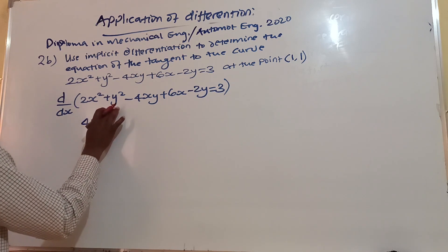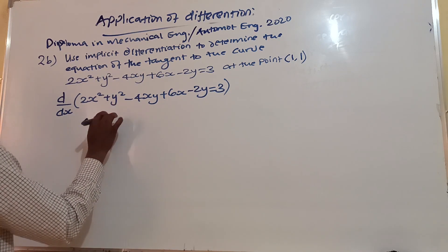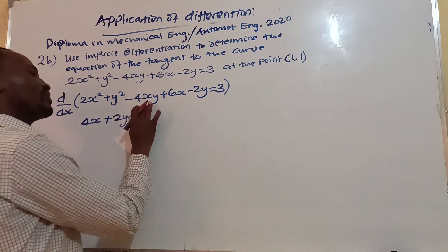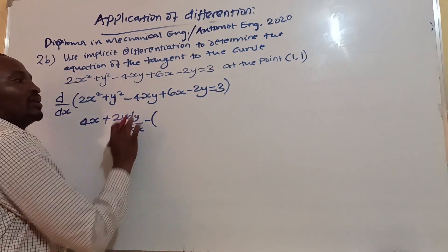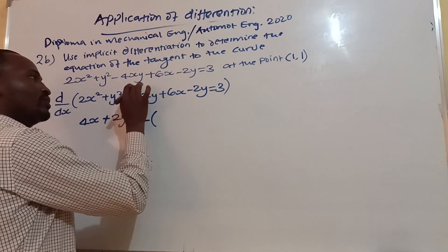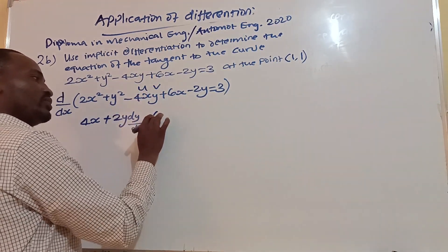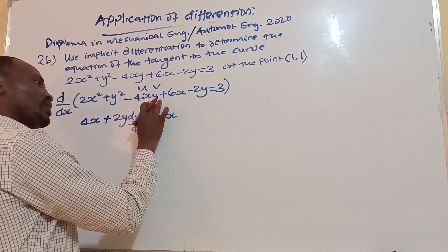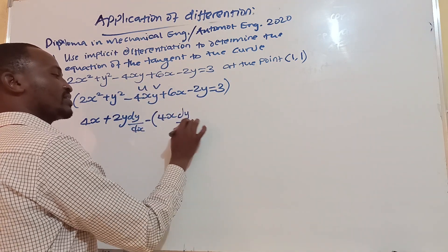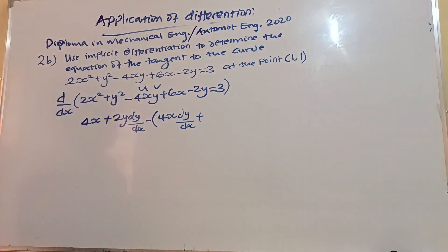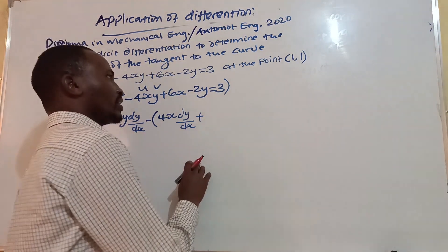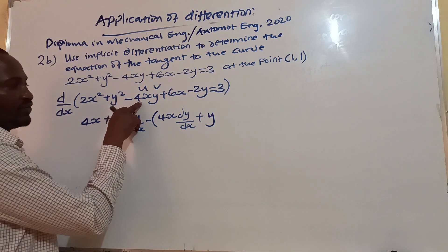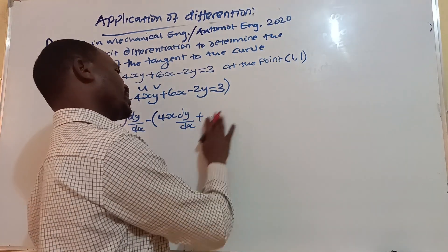Differentiating y squared with respect to x gives 2y dy/dx. For the term 4xy, we must use the product rule. Let u equal 4x and v equal y, so the derivative is u dv/dx plus v du/dx, which gives 4x dy/dx plus y times 4, that is 4y.